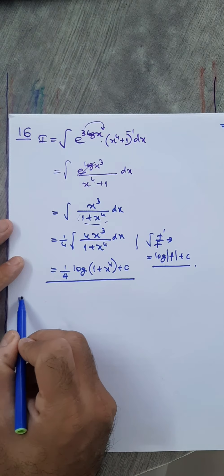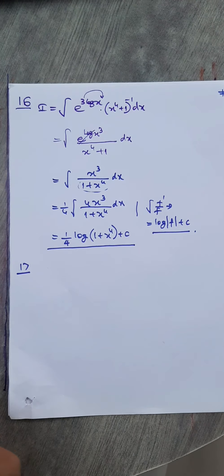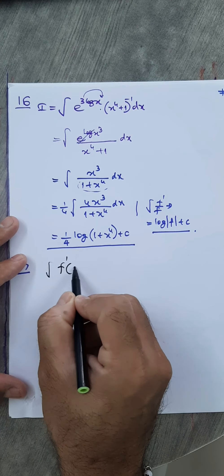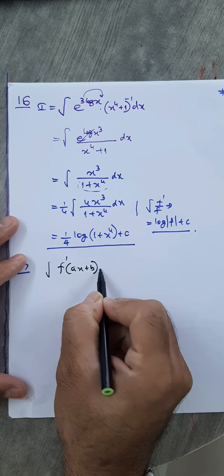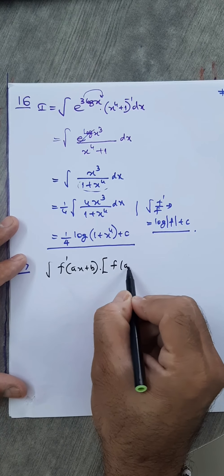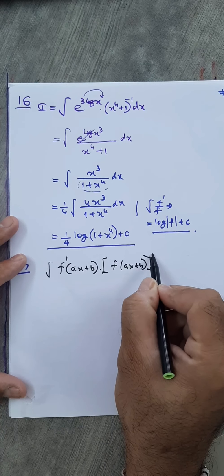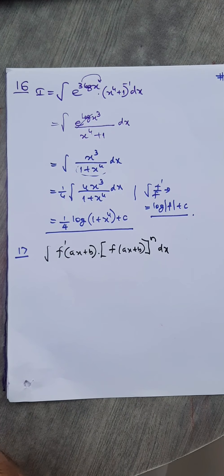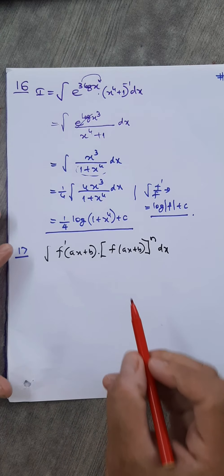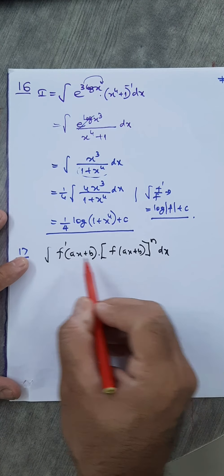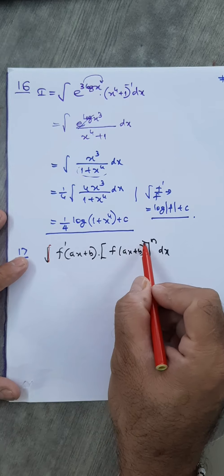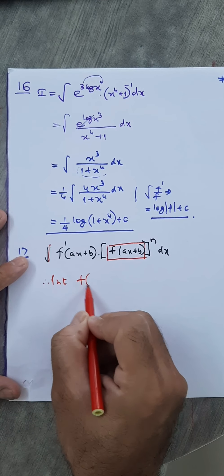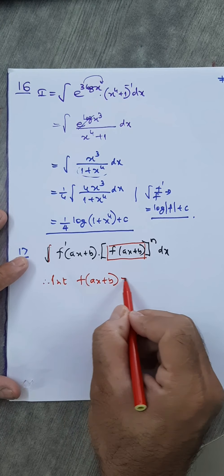Question number 17: integral of f'(ax+b) into [f(ax+b)] raised to n. The difficult part to integrate is the 'raised to n', so we use substitution. Put f(ax+b) equals t, then differentiate by chain rule: f'(ax+b) times derivative of (ax+b), which is a, equals dt/dx.